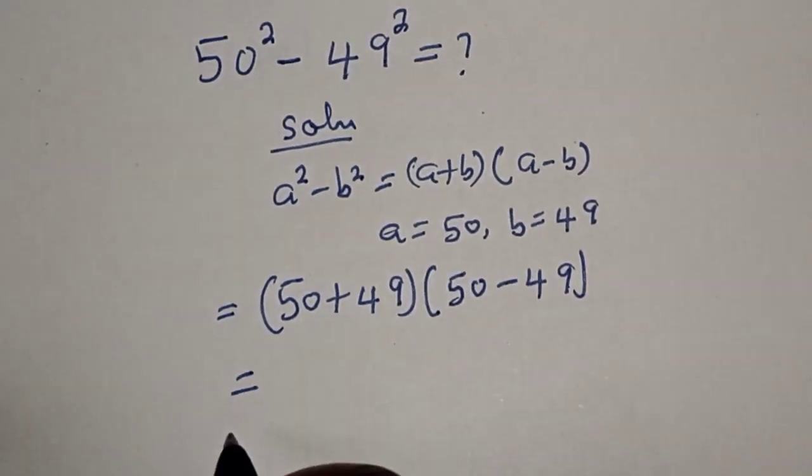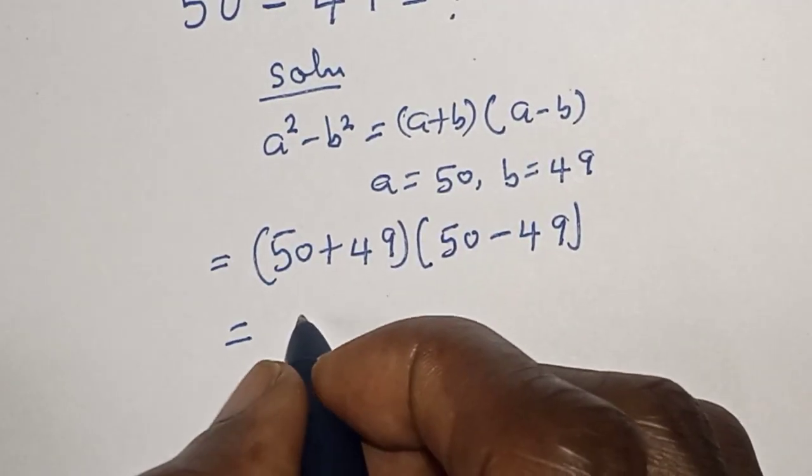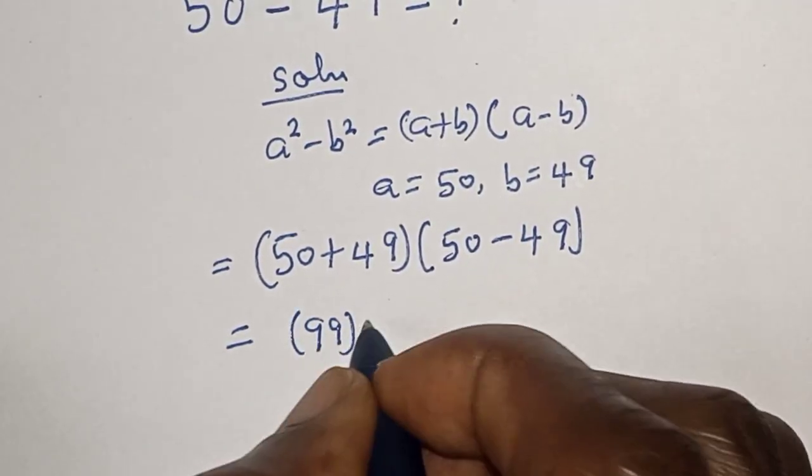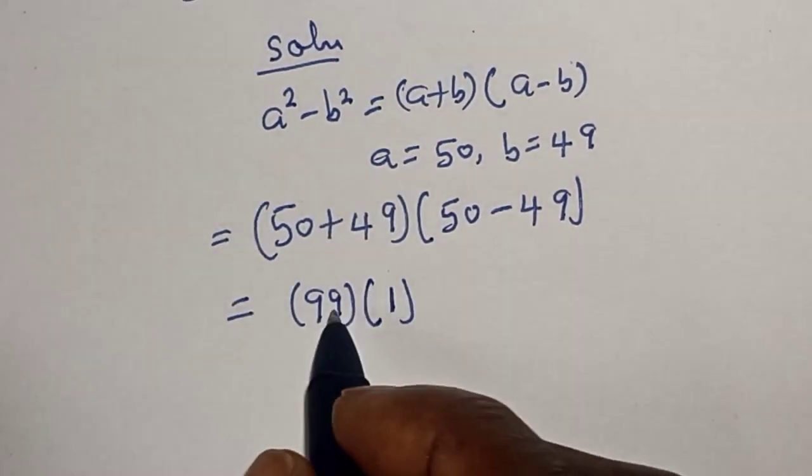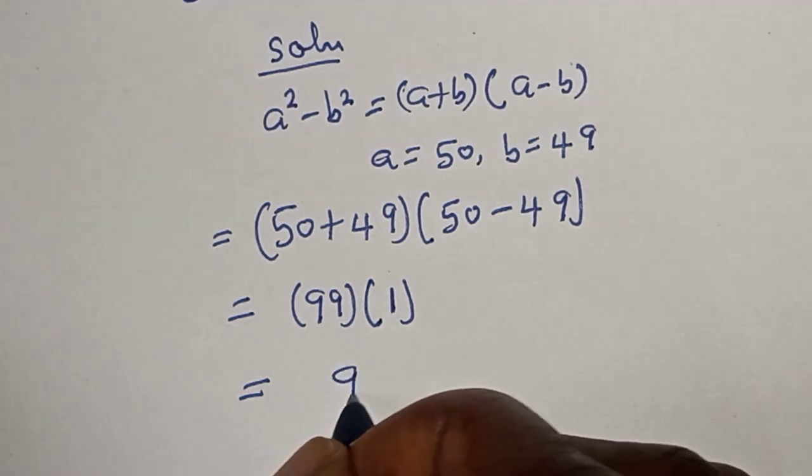This is equal to 50 plus 49, that is 99, multiplied by 50 minus 49, which is 1. And if you multiply 99 times 1, it equals 99.